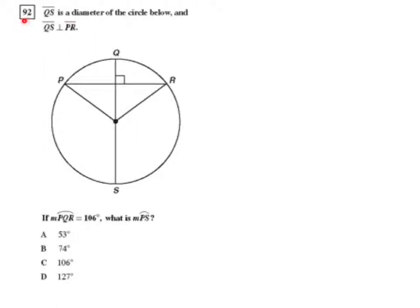Question 92 from the Geometry CST release test questions. Line segment QS is a diameter of the circle below, and line segment QS is perpendicular to line segment PR. And we have our little box there that tells us that's 90 degrees.